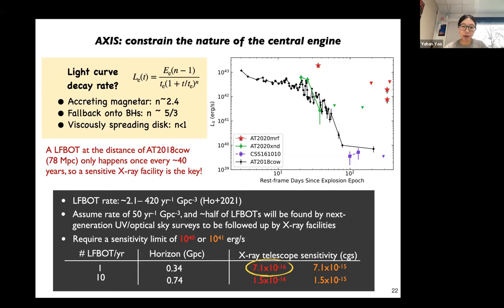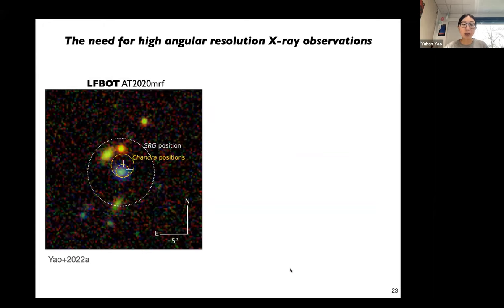The volumetric rate of luminous FBOTs is very small, so to construct a sample with good X-ray coverage, we want to ensure that at least one luminous FBOT per year can be followed up in the X-ray down to a meaningful limit of 10 to the 40 ergs per second. This requires an X-ray instrument with a sensitivity of 7 times 10 to the minus 16 CGS units, which speaks to the requirement for a sensitive X-ray facility.